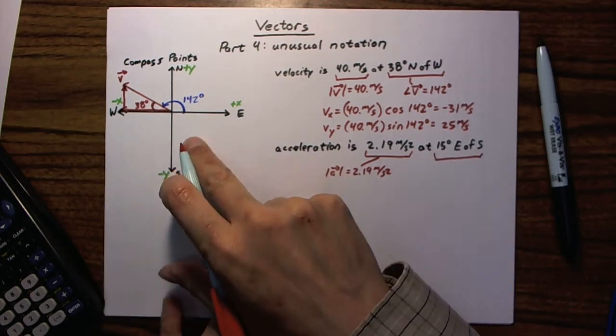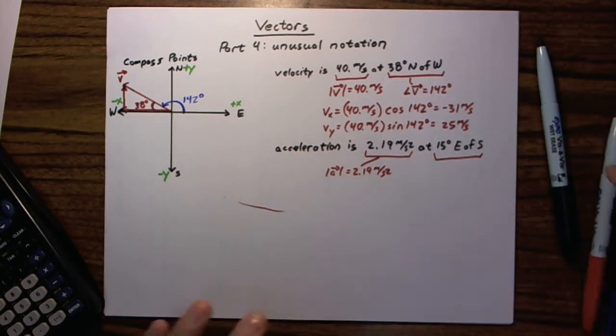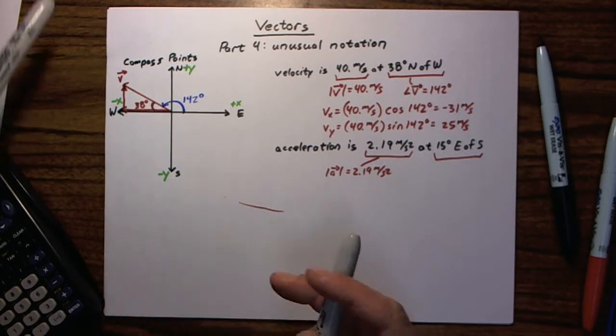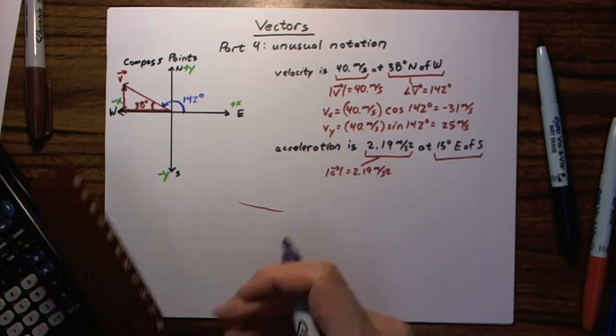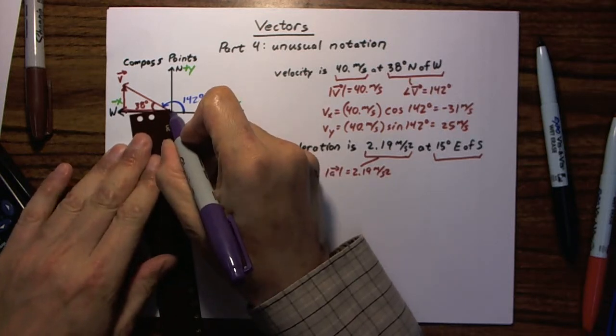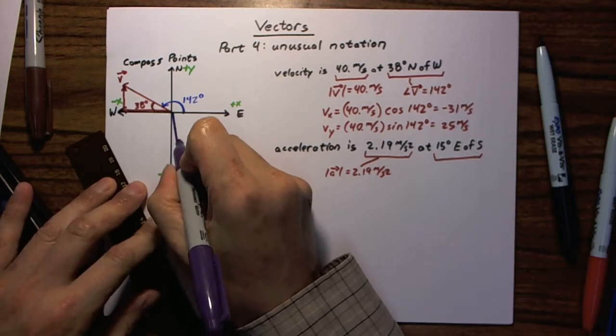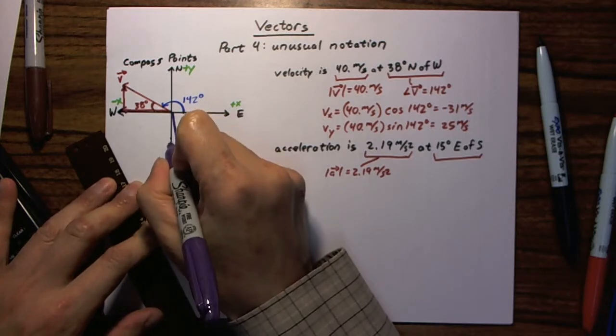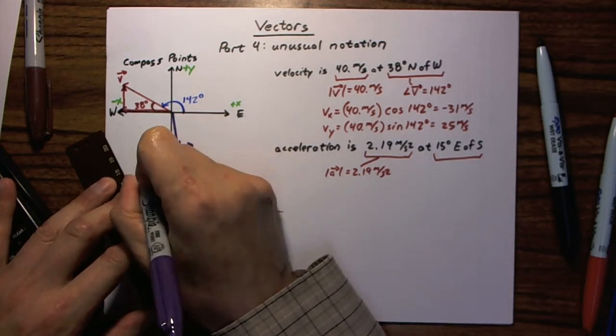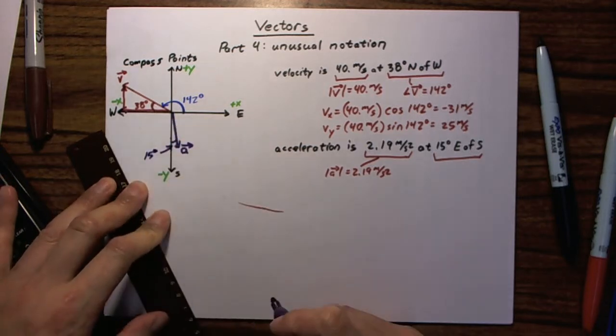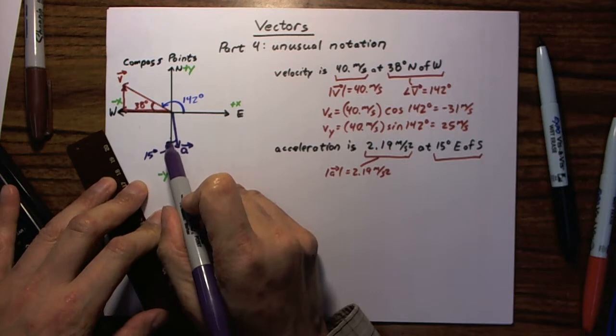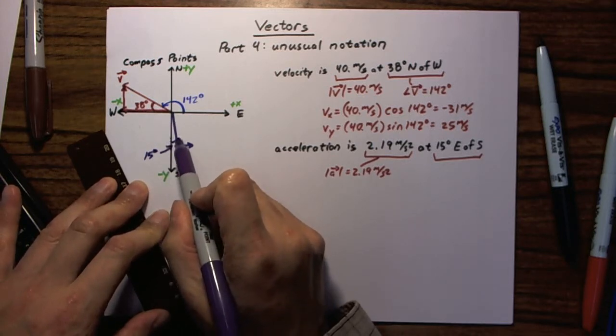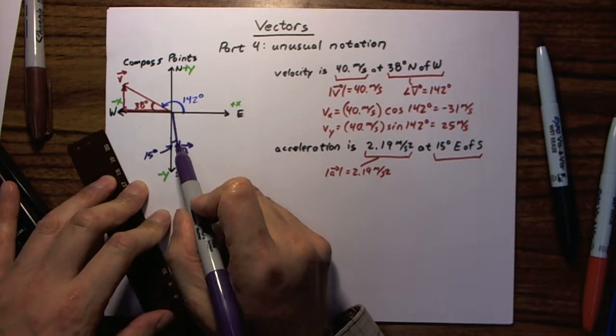Start at south, rotate east, 15 degrees. So, we will have, let's see, I'm running out of colors here. Let me grab a couple more colors. There we go. All right. 15 degrees is a pretty sharp angle, so it's going to be something like that. So, our acceleration vector is going to go something like that. This angle here is going to be 15 degrees. In other words, between the south, the negative y-axis, and our acceleration vector is a 15-degree angle.